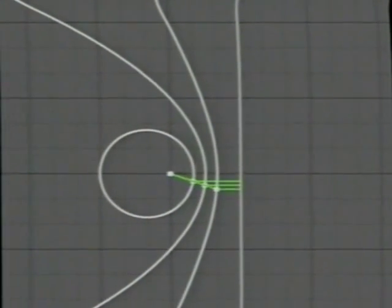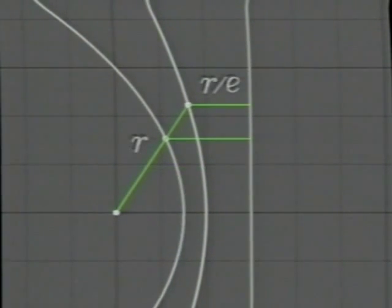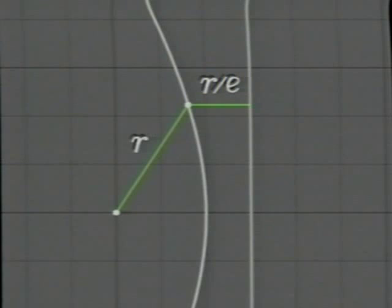All three conic sections share a common property, and all three can be described by a common algebraic equation, an equation that is useful for studying planetary motion.